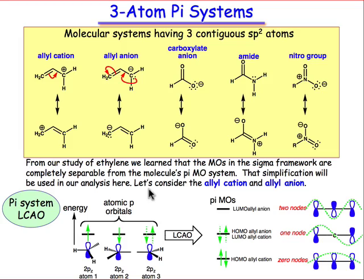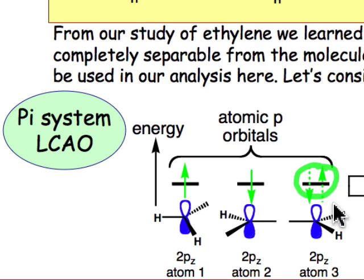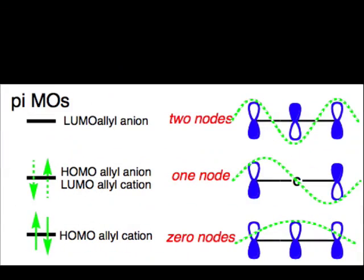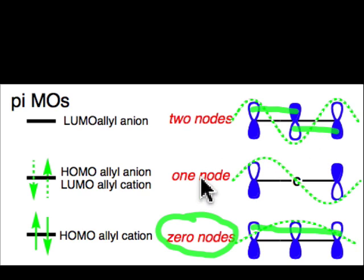Let's begin with a qualitative approach to LCAO. We begin with three atomic p orbitals: two of them have a single electron in them and the third either has a pair of electrons for the allyl anion, or for the allyl cation has no electrons in that p orbital. These atomic orbitals come together and make a new set of molecular orbitals. We can anticipate that there will be three of them and that their energies are going to depend on the number of nodes. Zero nodes is easy to create — we match the phases of all three p orbitals together. Two nodes is pretty easy to generate because we just alternate the phase between adjacent atoms. And then we can anticipate that in between those we're going to have a molecular orbital that has one node.